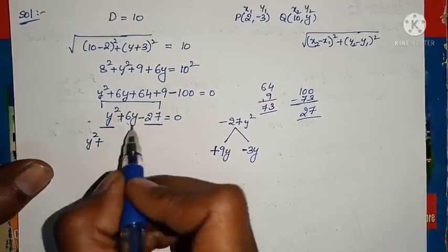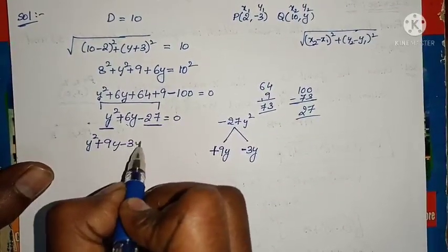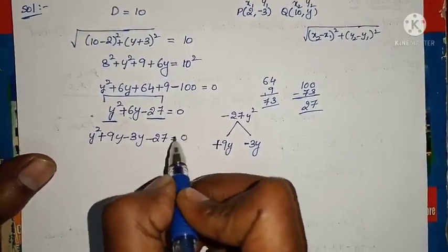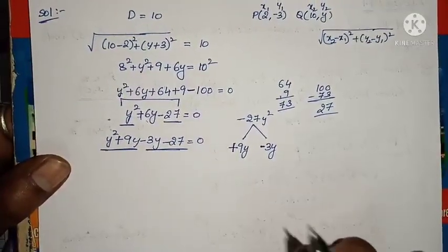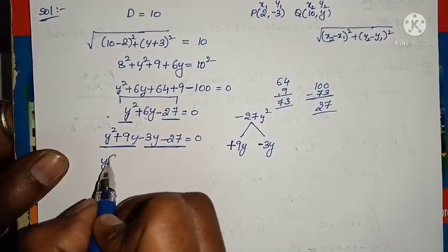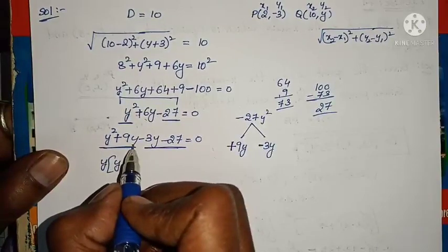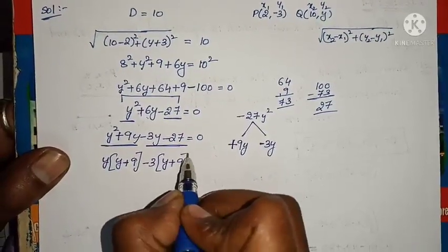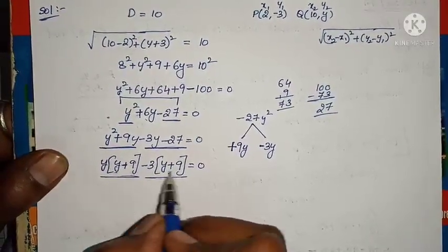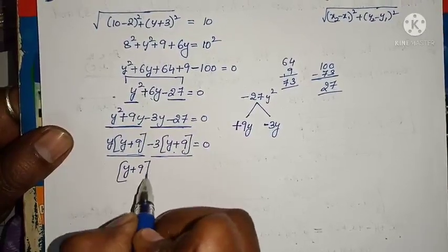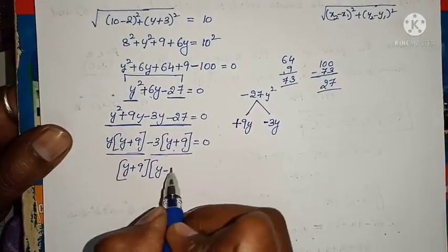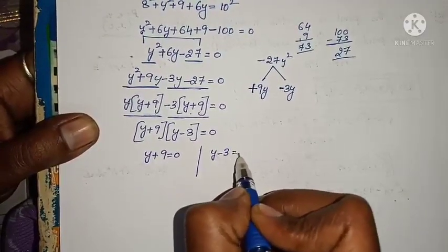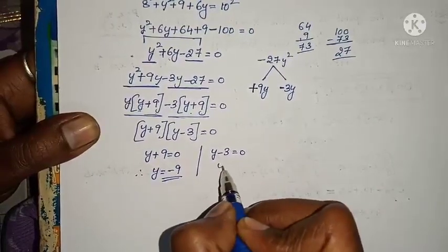So: y squared plus 9y minus 3y minus 27 equals 0. Take the first two terms as one set and the next two as one set. From the first set take y as common — y(y plus 9). From the second set take minus 3 as common — minus 3(y plus 9). Now take (y plus 9) as common: (y plus 9)(y minus 3) equals 0. Separating: y plus 9 equals 0 gives y equals minus 9, and y minus 3 equals 0 gives y equals 3.